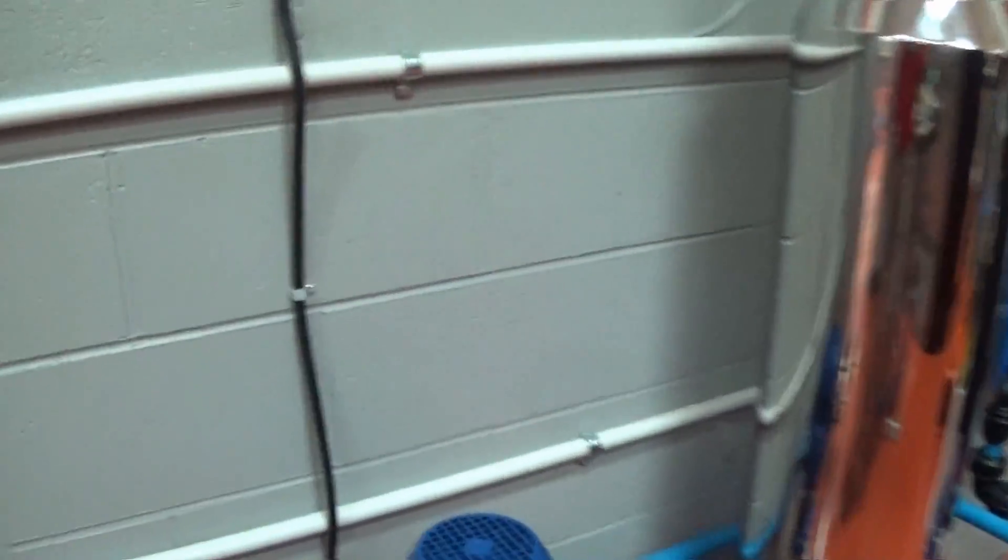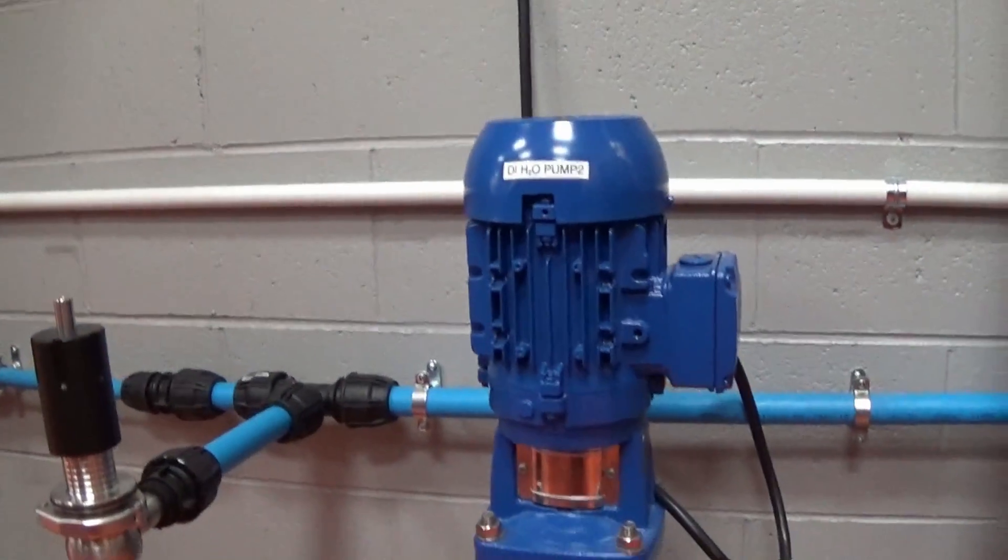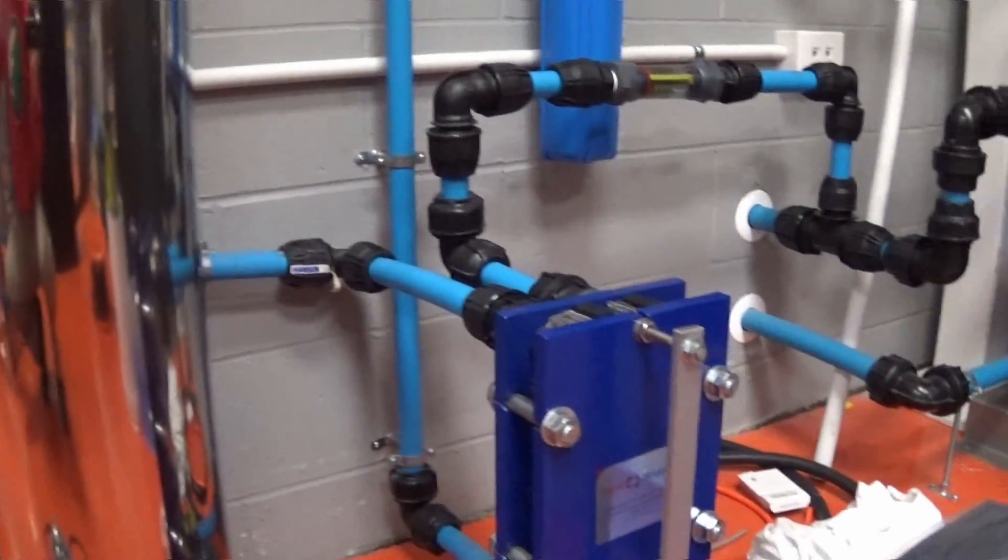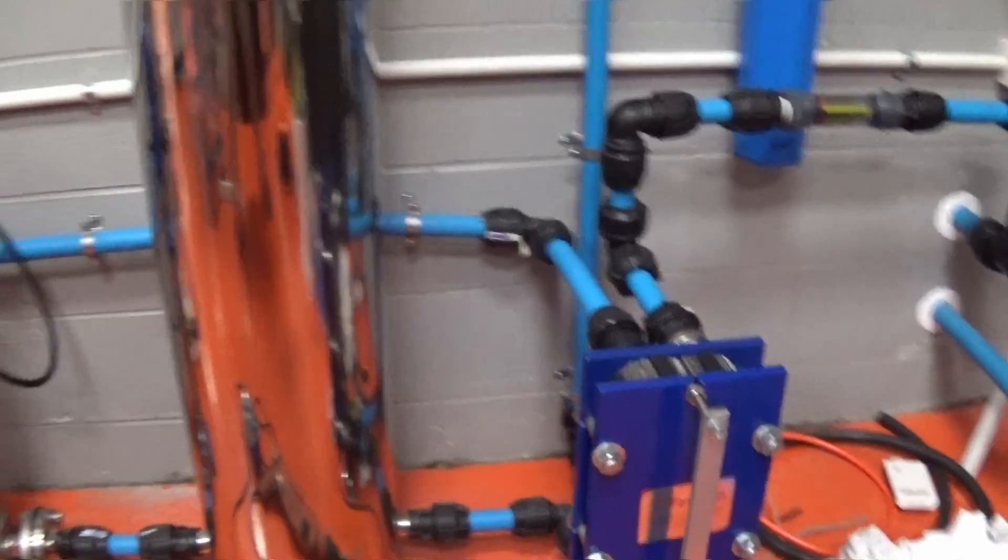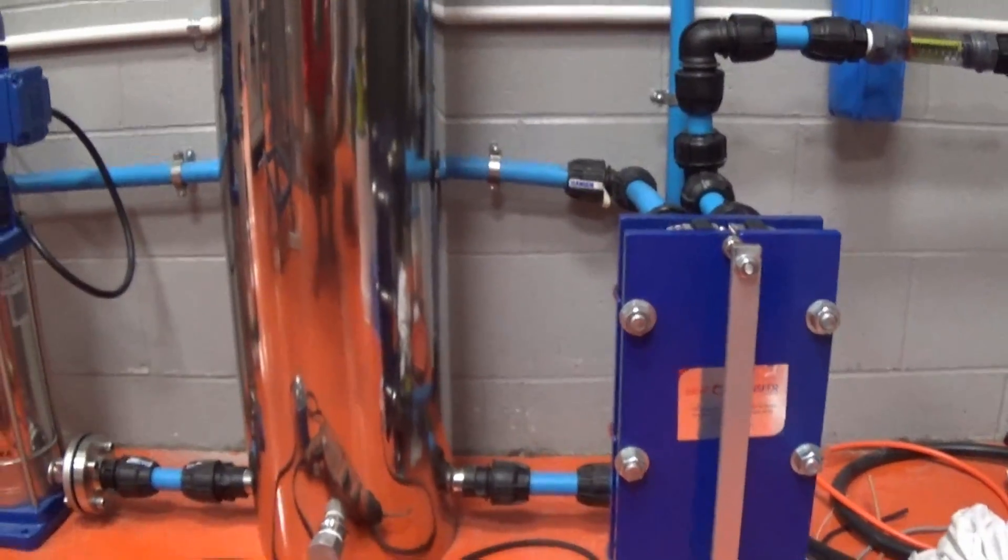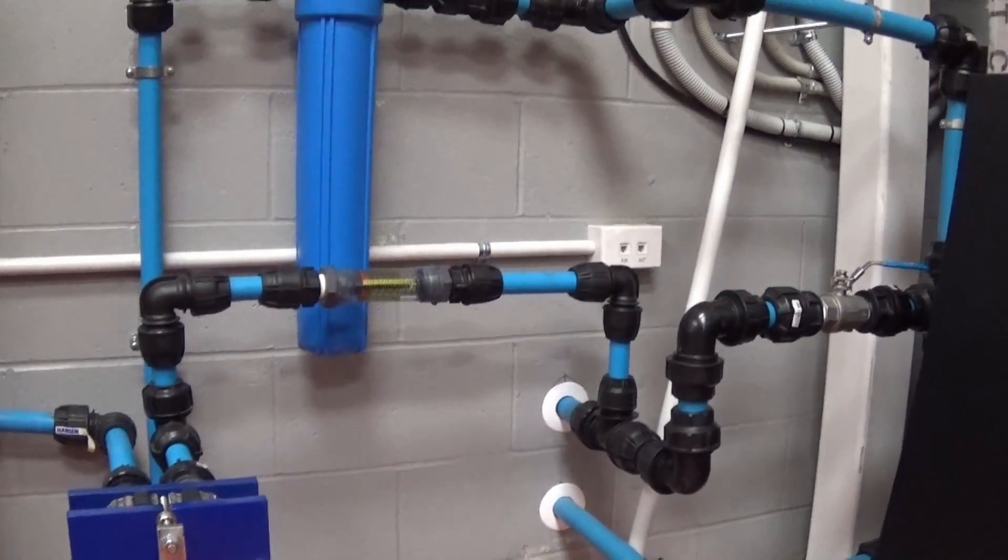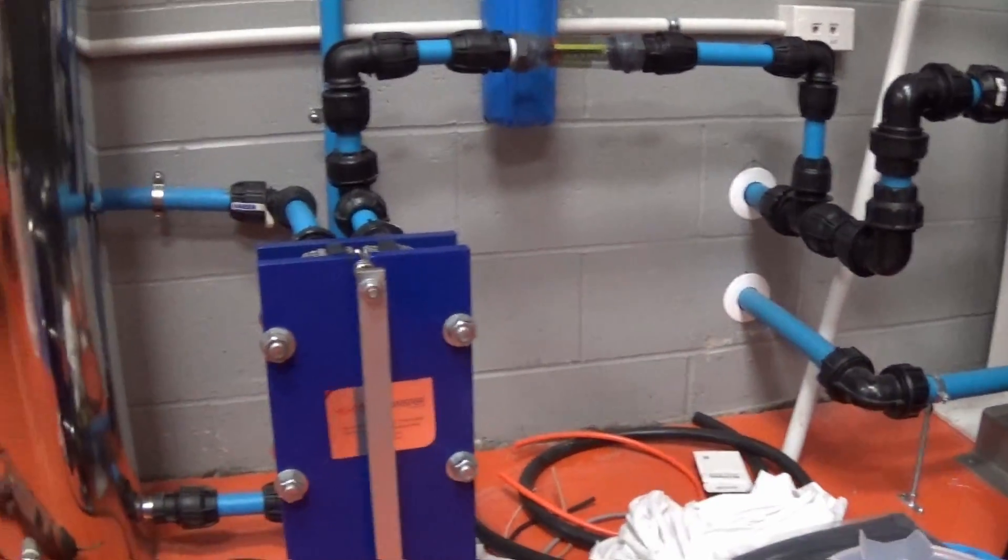And over here, against the wall, this is the pump that pumps the water through all of the cooling systems in here. And the water runs into this heat exchanger here. So to the left of the heat exchanger is the water that goes into the cooling system. And then to the right here, this is water that's just run around through a chiller outside the building that cools our cooling water.